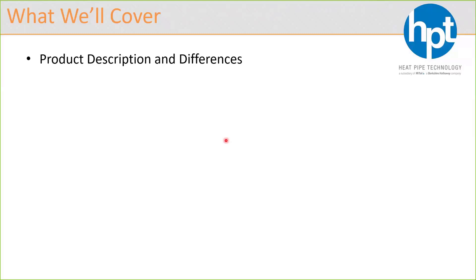Here's a summary of what I'll be covering in this webinar. First, I'll talk about product description and differences or similarities between the two vertical products we have. It won't be too extensive — that could be a webinar in itself. If anyone needs more information, we have tons of documents available online at heatpipe.com, or you can reach out to us.